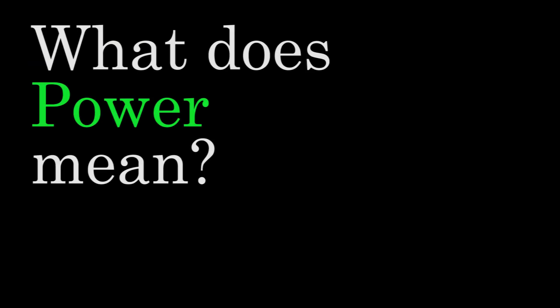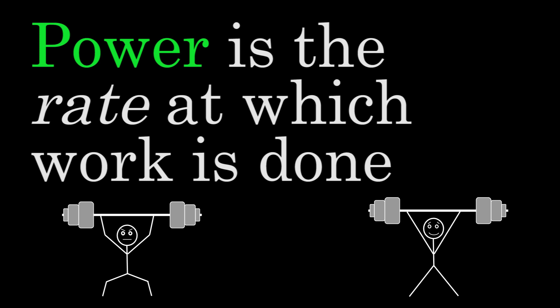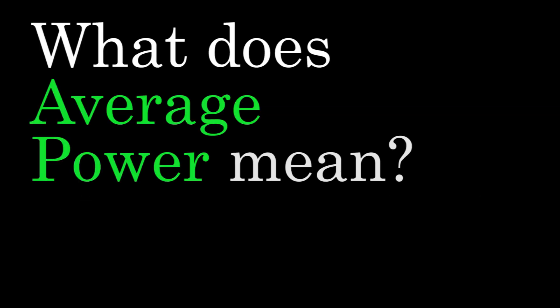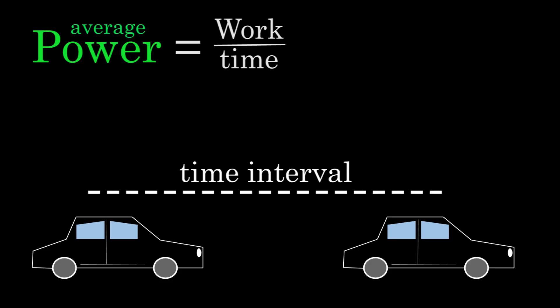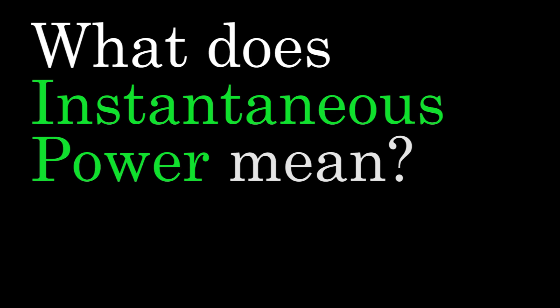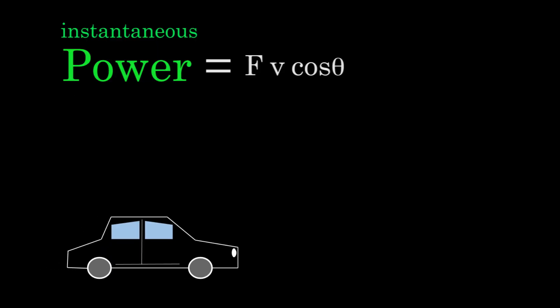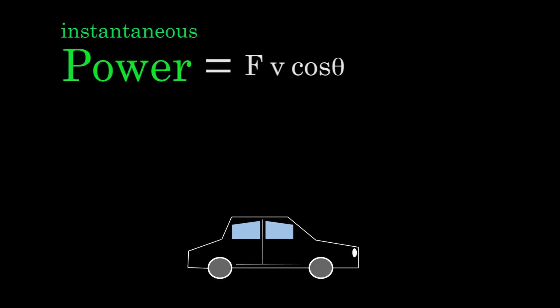Alright, so what does power mean? Power is the rate at which work is done. What does average power mean? Average power is the work done divided by the time interval that it took to do that work. What does instantaneous power mean? Instantaneous power is the power output of a force at a particular moment in time.